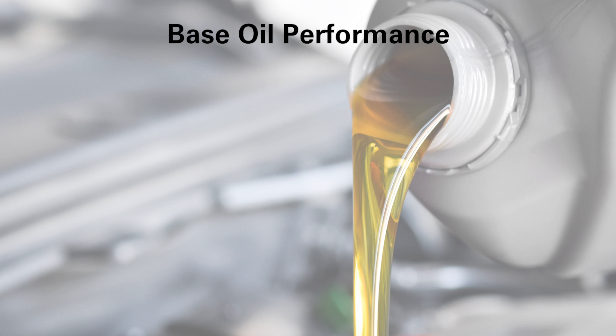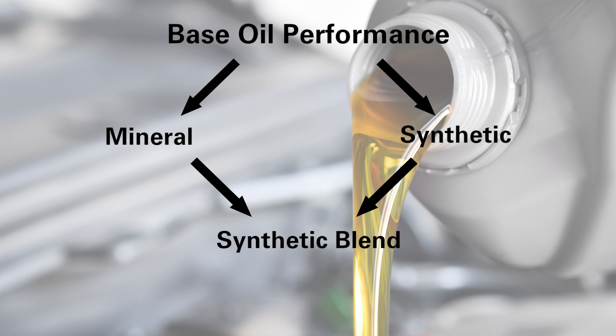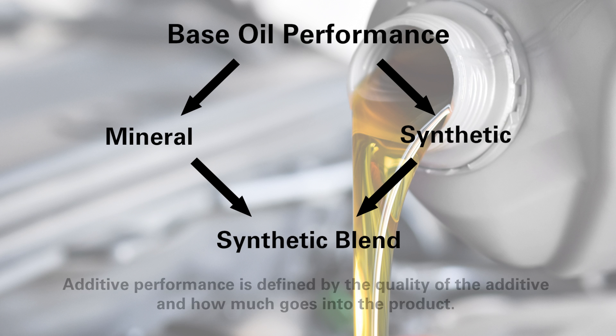So Mark, where do we start? First, we need to understand how engine oil is made. It starts with the right balance of base oils and additives. Base oil performance is typically divided into two categories — mineral or synthetic, or a combination of the two called synthetic blend. Additive performance is defined by the quality of the additive and how much goes into the product. Selecting the right combination of base oil and additive is the ultimate challenge.